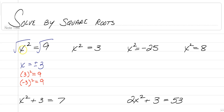Because just like we said, if we substitute a positive 3 or a negative 3, we would end up with 9. In this next example, we have x squared is equal to 3, so we're going to square root both sides and we're going to have x is equal to plus or minus square root of 3 as our final answer. The square root of 3 squared gives you 3, and negative square root of 3 squared also gives you 3.